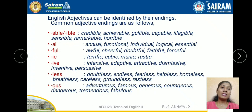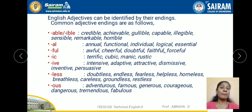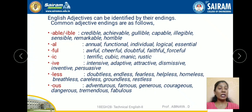We can find adjectives in a statement through certain suffixes. Words ending with -ible or -able: credible, achievable, gullible, capable. Ending with -al: annual, functional, individual, logical, essential. Ending with -ful: awful, cheerful, doubtful, faithful, forceful. Ending with -ic: terrific, cubic, manic, rustic. Ending with -ive: intensive, adaptive, attractive, dismissive, inventive, persuasive. Ending with -less: doubtless, endless, fearless, hopeless, helpless. Ending with -ous: adventurous, famous, generous, courageous, dangerous, tremendous, fabulous. If a word contains these suffixes, it is obviously an adjective qualifying another noun in the same statement.